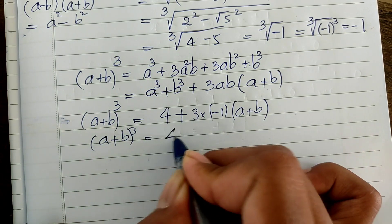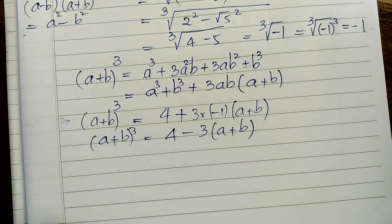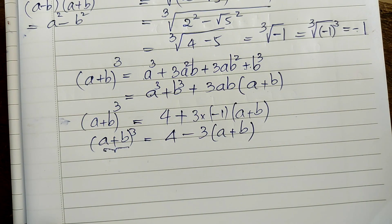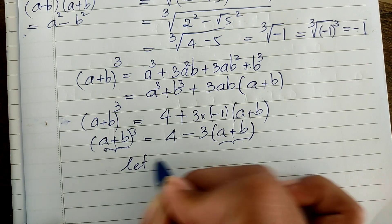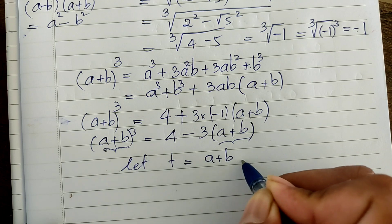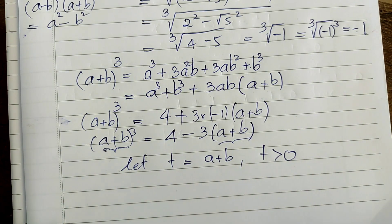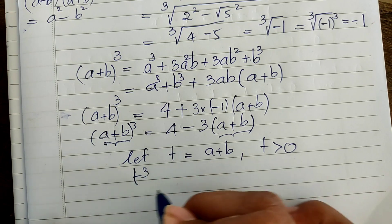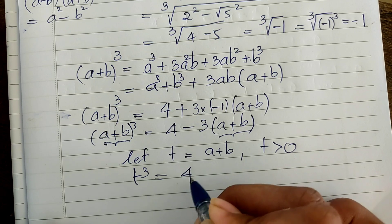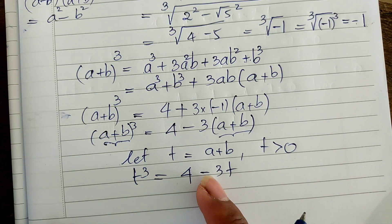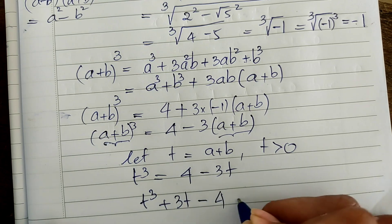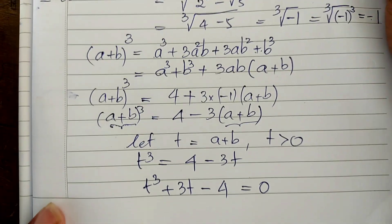So (a plus b) cubed equals 4 minus 3(a plus b). Let t equal a plus b, where t is positive. Then t cubed equals 4 minus 3t. Moving everything to the left hand side, we get t cubed plus 3t minus 4 equals zero.